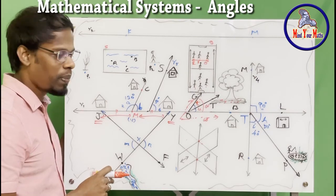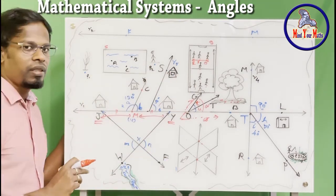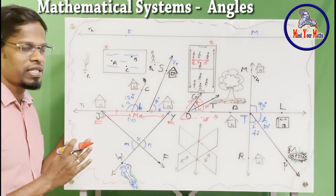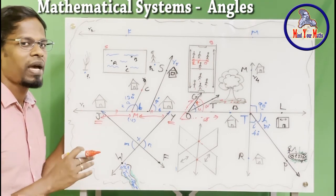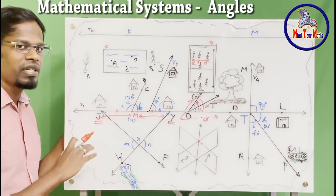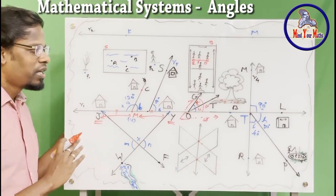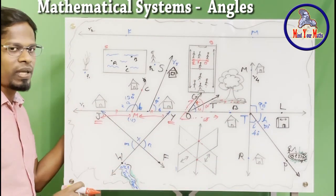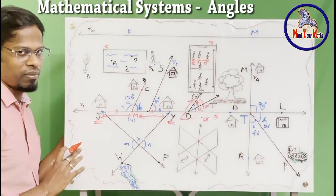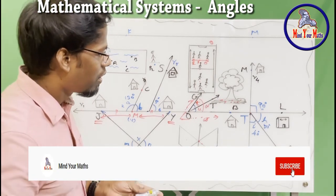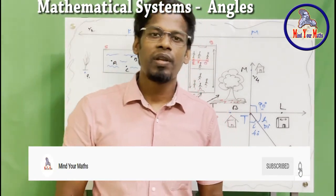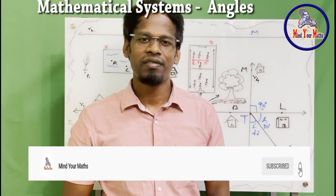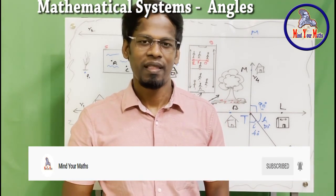So this is how you use geometric concepts to read maps, especially when you come across maps of your subdivision, your country, or anything — it's all based on these concepts. That's why I used this example to explain the mathematical system. This is all for angles. In the next video, I'm going to explain axioms as well as postulates. Keep watching for the next videos in the mathematical system. Thanks.